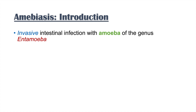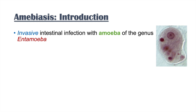Intestinal amoebiasis is an invasive intestinal infection with amoeba of the genus Entamoeba. You can remember the word Entamoeba by breaking it down: the suffix 'amoeba' is easy, and then 'ent' stands for intestinal. So that's how we can remember this genus of amoeba.